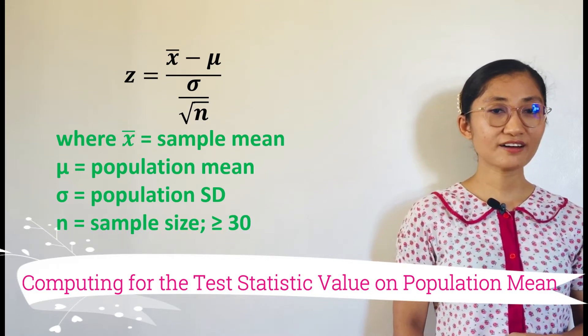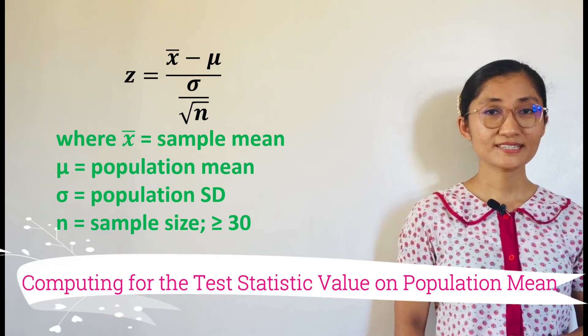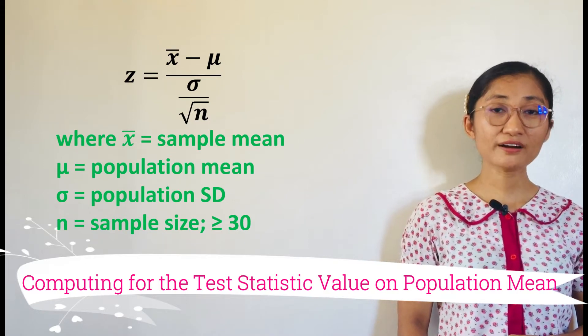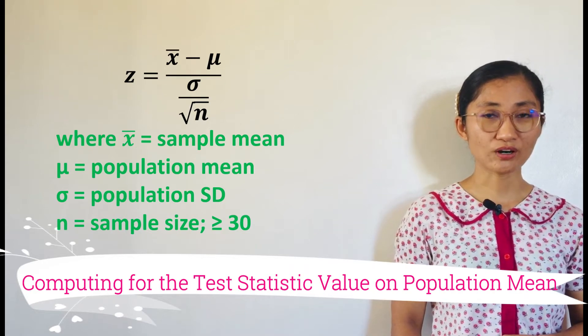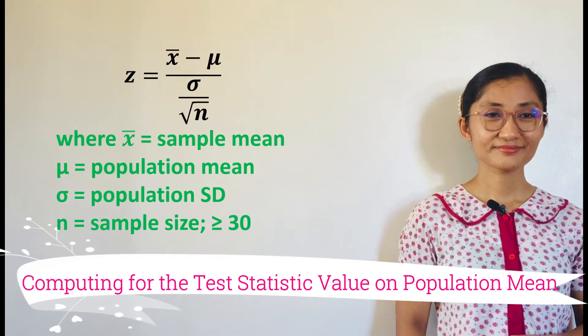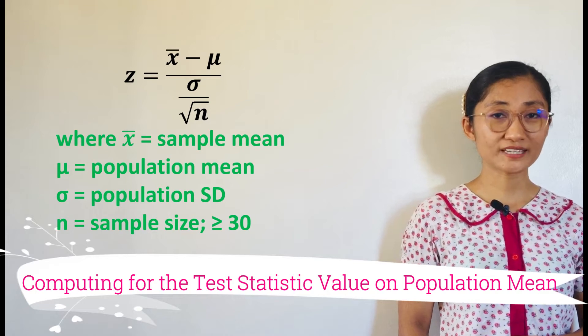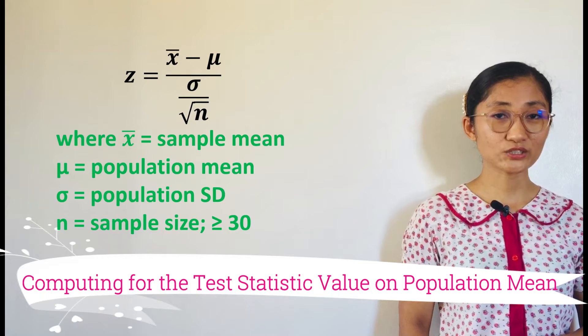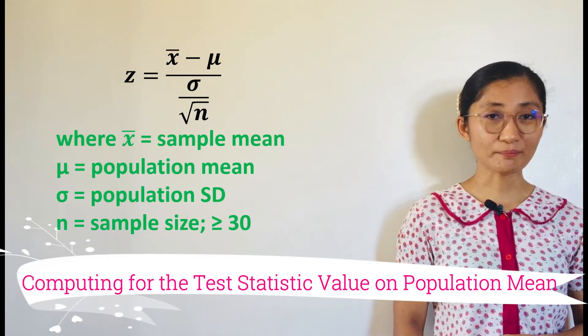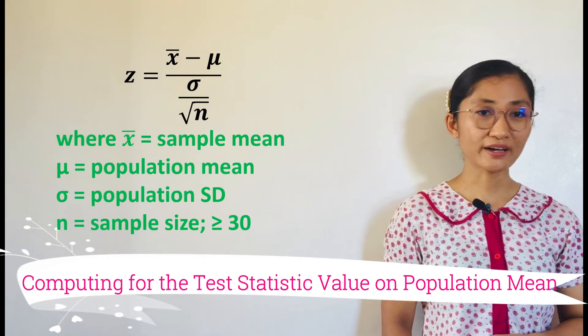To find the Z-value, we use the formula Z equals X-bar minus mu over sigma over square root of n, where X-bar is the sample mean, mu is the population mean, sigma is the population standard deviation, and n is the sample size.